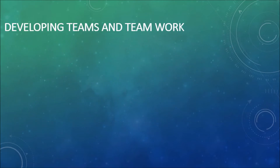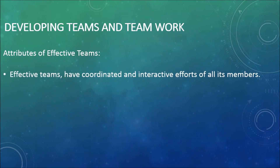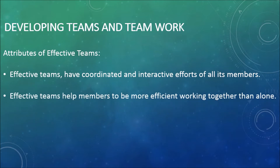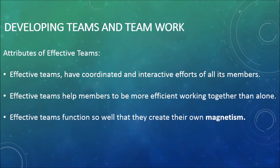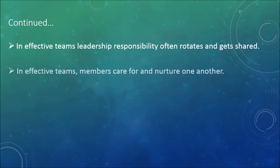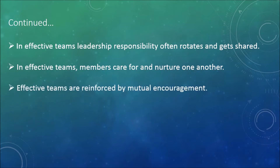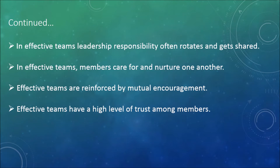Developing teams and teamwork. Following are the attributes of effective teams. Effective teams have coordinated and interactive efforts of all members. They help members be more efficient working together than alone. Effective teams function so well they create their own magnetism. Leadership responsibility often rotates and gets shared. Members care for and nurture one another, teams are reinforced by mutual encouragement, and there is a high level of trust among members.